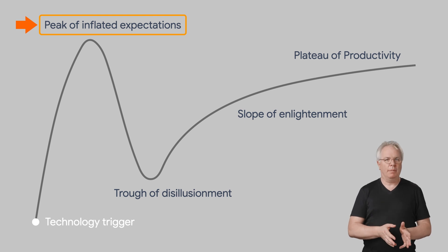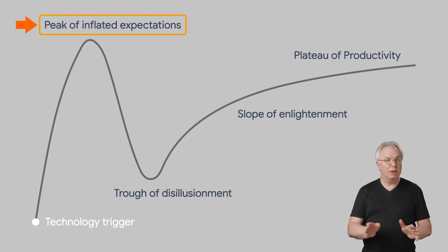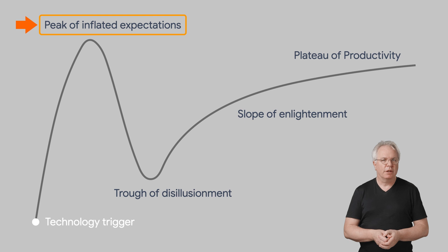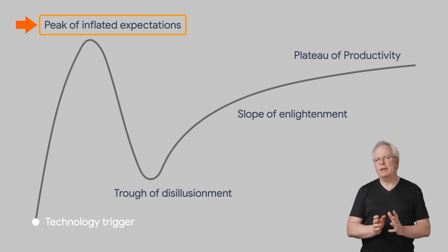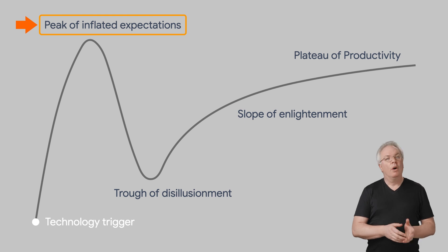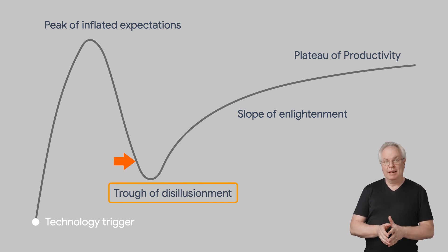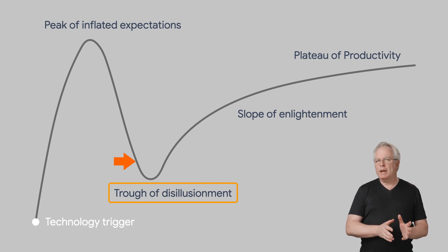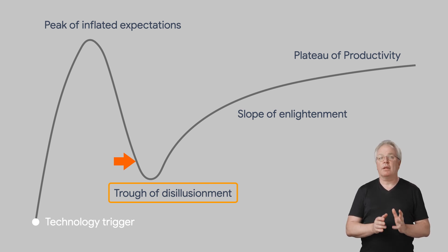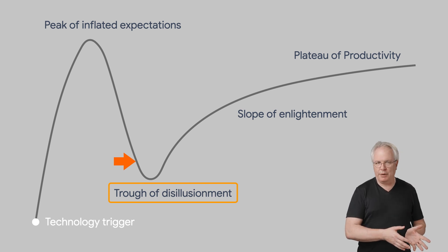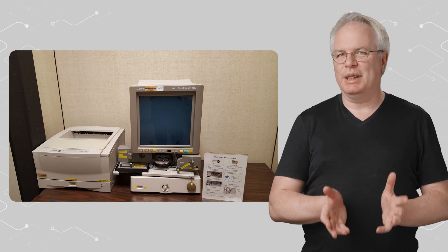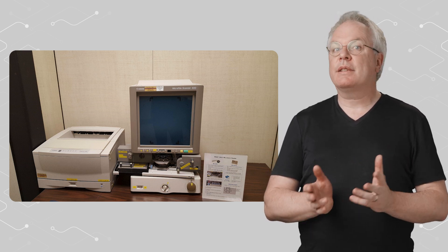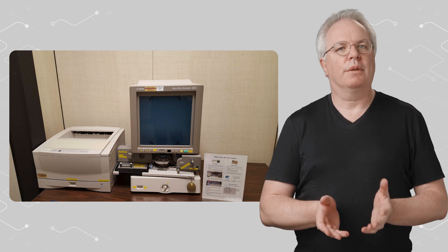The peak of inflated expectations is the epitome of hype, where the realities of the technology are drowned out by hyperbole, the possibilities are generally overstated, and the implications are often feared. The history of technology is littered with innovations that fail to get past this peak. When reality sets in, we fall into the spectacularly named trough of disillusionment — the reality check, where grandiose ideas fail to materialize and people often give up.